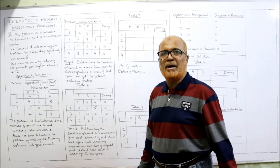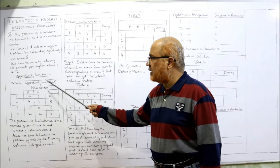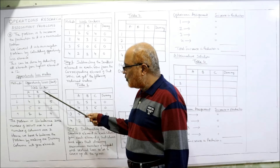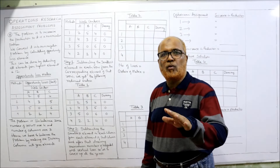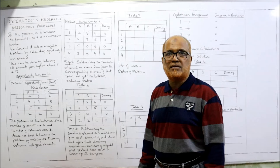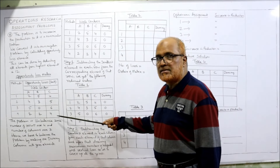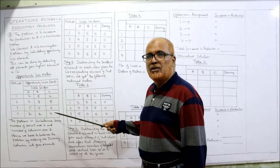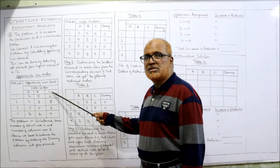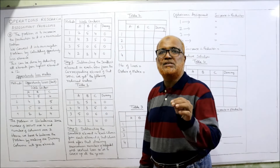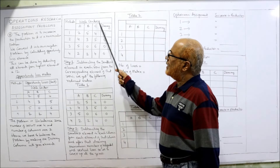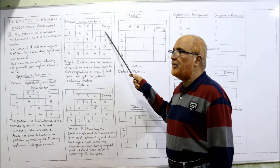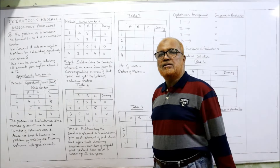Now the problem is unbalanced because we have four rows and only three columns. We need four rows and four columns to be balanced. Since one column is less, we add one dummy column with all zero elements. So we have A, B, C as the original columns, and one additional dummy column with zeros. All other values remain the same apart from the dummy column.